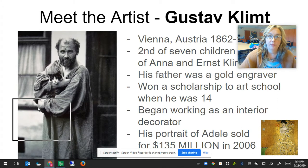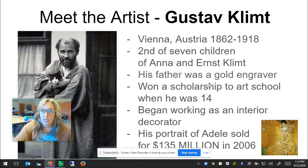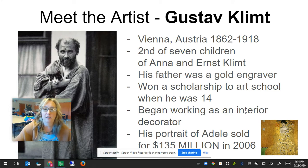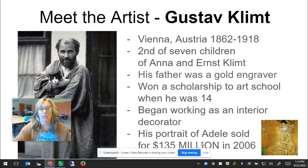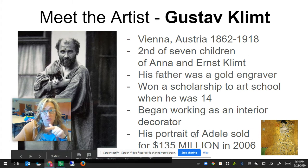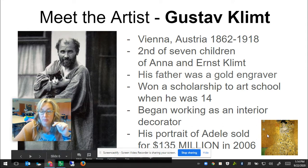Mr. Gustav Klimt was born in Vienna, Austria in 1862 and died in 1918. He was the second of seven children of Anna and Ernst Klimt. His father Ernst was a gold engraver, and when Gustav was 14 years old, he won a scholarship to art school. He began working as an interior decorator doing murals on the insides of buildings, but later became a portrait artist and used a lot of gold in his painting, inspired by his dad. His portrait of Adela Bloch Blauer is very famous — there was a movie made about it and it sold for $135 million in 2006. You could visit the Neue Galerie in New York City and see this painting up close.